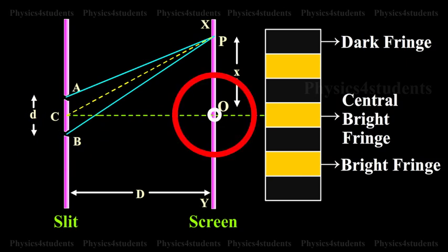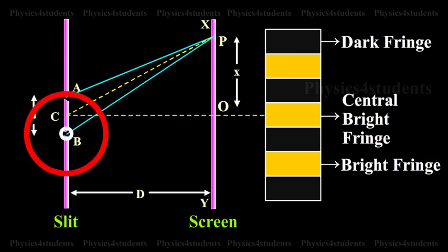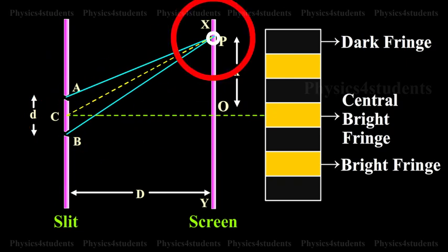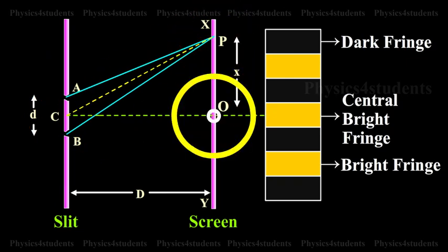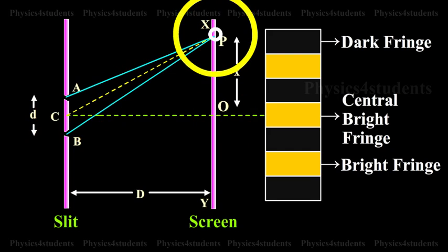O is a point on the screen equidistant from A and B. P is a point at a distance X from O as shown in the animation. Waves from A and B meet at P in phase or out of phase depending upon the path difference between two waves.